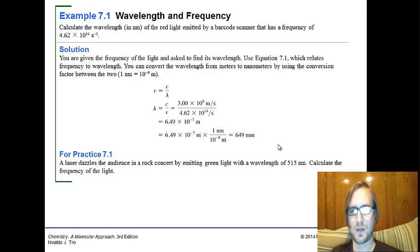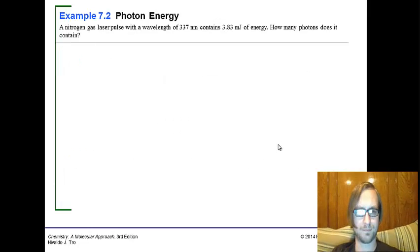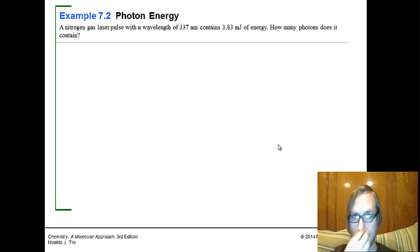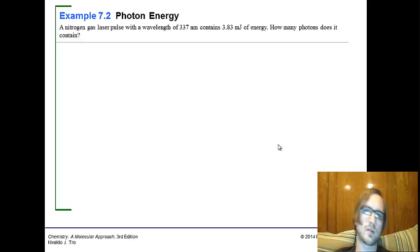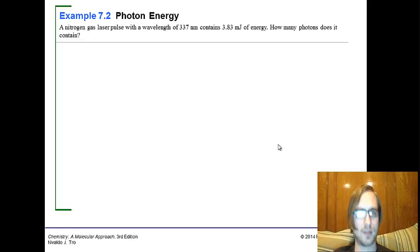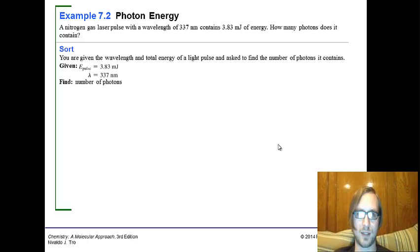Here's another practice problem for you to try. Example 7.2, energy. A nitrogen gas laser pulse at the wavelength of 337 nanometers contains 3.83 millijoules of energy. How many photons does it contain? If we know the amount of energy per photon at 337 nanometers, we can calculate that first. Then if we know how much energy we have total, we can divide to figure out how many photons we needed.